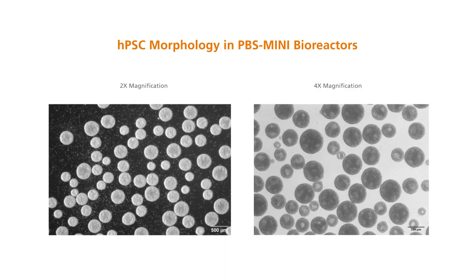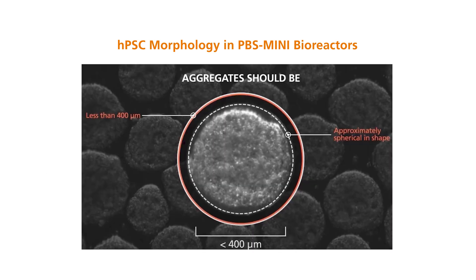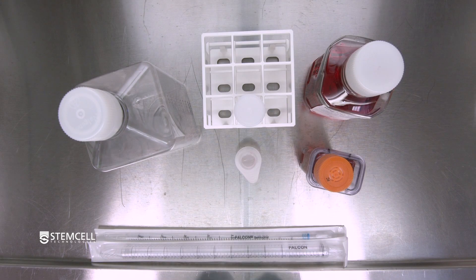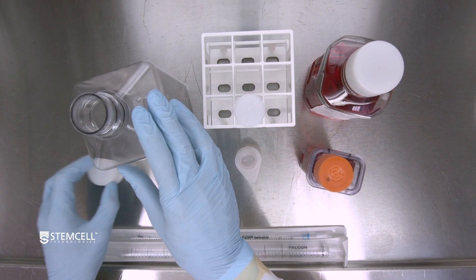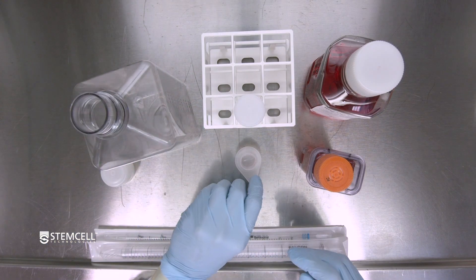Typical aggregate morphology on day 4 of a culture demonstrates an aggregate size of roughly 300 to 400 microns in diameter, and the aggregates look circular with dark marking in the middle. Next, place a 37 micron filter over the waste bottle.